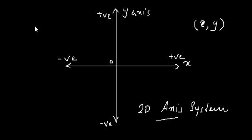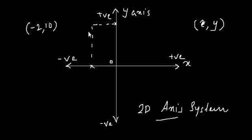For example, the point minus 2, 10 — where x equals minus 2 and y equals 10 — defines a specific point. Similarly, you can define any point in the space with two numbers. Remember, these lines extend to infinity, so you have no limits and can move anywhere in this plane.